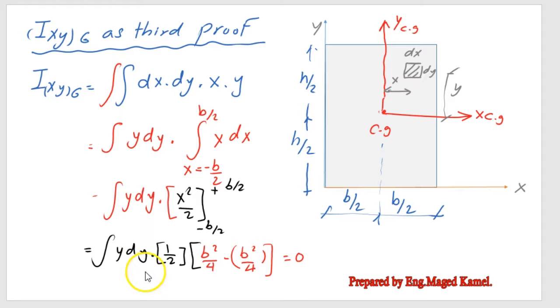Then we know we don't need to estimate the integration of Y DY. At the end, the I_XY for the center of gravity at the center of gravity equals 0.